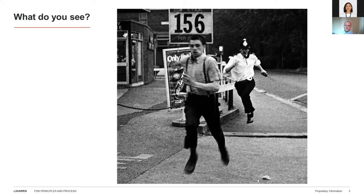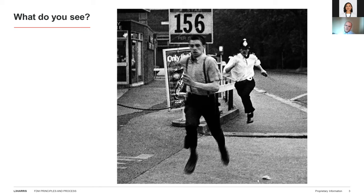What I see is a black and white picture, so that probably dates it — it's a bit grainy as well. We've got a policeman and we've got a young lad running away from him. The number in the background, 156, that's the price of petrol per gallon, as this is a UK photo. This dates us to the early 1980s. So essentially, this is a policeman chasing a young lad down the road.